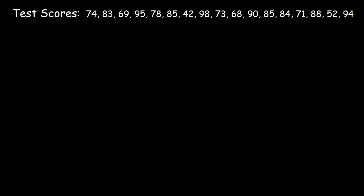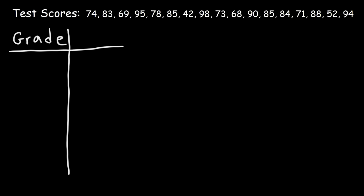The first thing we need to do is create a frequency distribution table. We're going to have two columns. The first column is the grades, arranged in a range — we're going to group certain values together. Because we're dealing with test scores, it makes sense to group them in ranges of 10. On the right we're going to put the frequency.